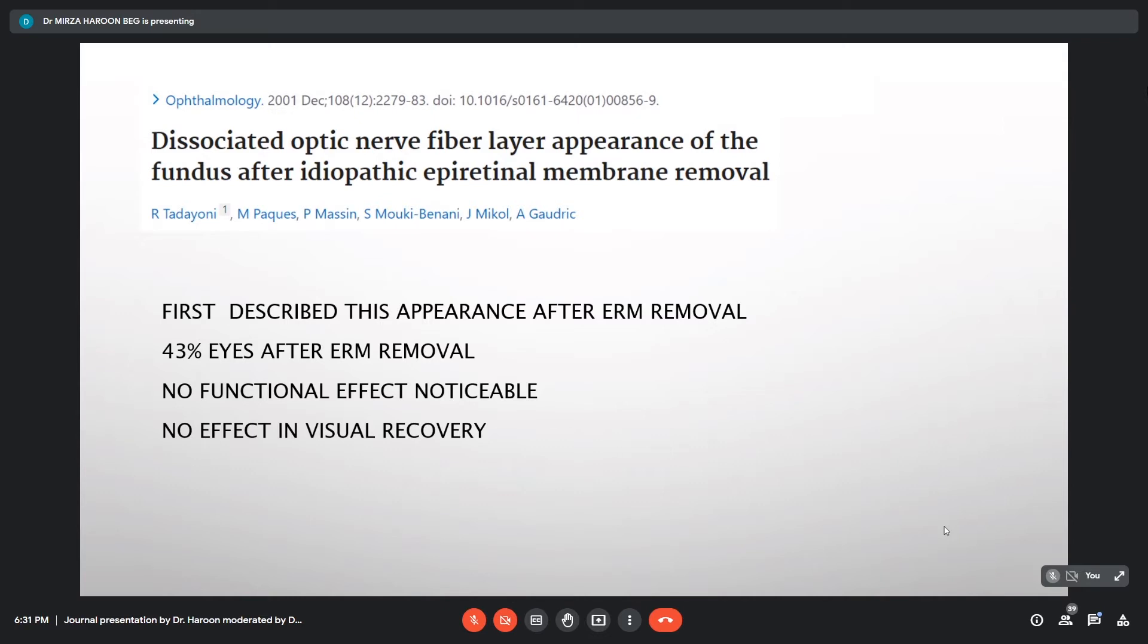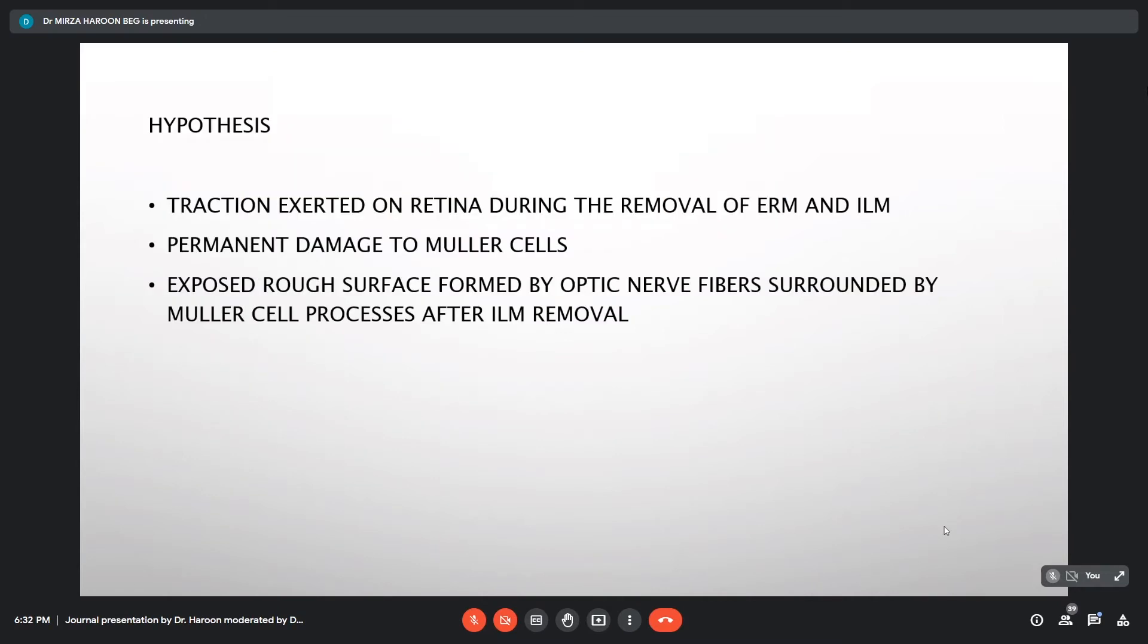They tried to correlate it with a lot of other factors. They gave a hypothesis saying that it either might be because of traction exerted on the retina during the removal of the ILM and the ERM, or it might be due to permanent damage to the Müller cells. One more thing is that the ILM, the two surfaces of ILM, the inner surface is the smooth one, the outer surface is the rough one. So after removal of that, the exposed rough surface formed by the RNFL fibers might be the reason for this.